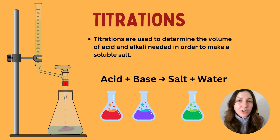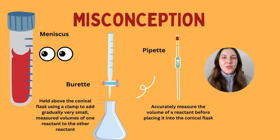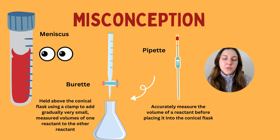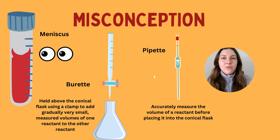We can do some calculations to determine concentrations and things like that, and that will be covered in part two of this video. So the whole aim of titrations is to add an acid to an alkali to make a salt and water. You're using a titration because you're trying to measure accurately and precisely the amount of acid needed to essentially neutralise the alkali substance to make that salt, using specific glassware that measures the volume of both.